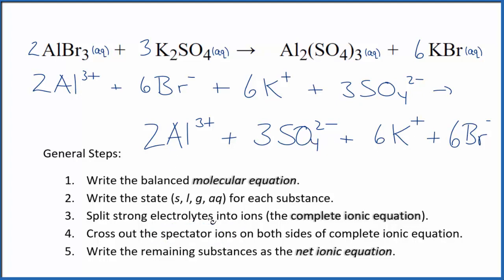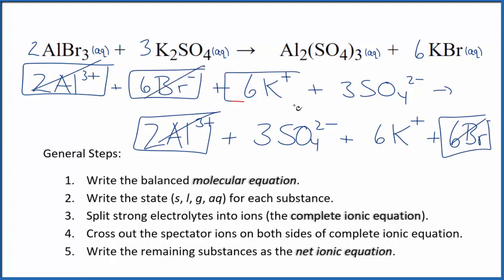If we cross out spectator ions, things that are on both sides, we have the aluminum ion - two aluminum ions. Those are spectator ions. Six bromide ions in the reactants, six bromide ions in the products. Six potassium ions in the reactants, again six potassium ions in the products. And three sulfate ions in both products and reactants. So everything crosses out. Everything's a spectator ion.